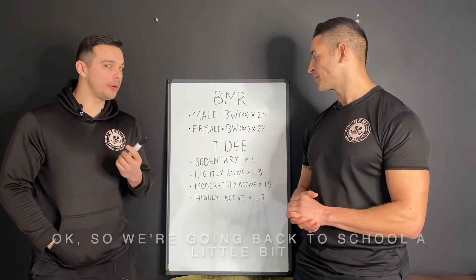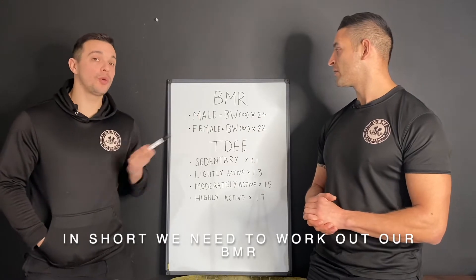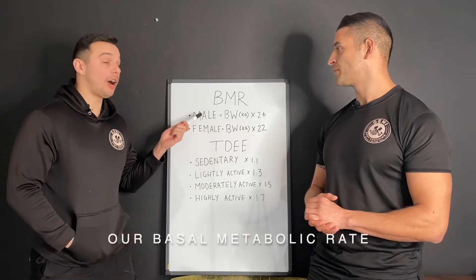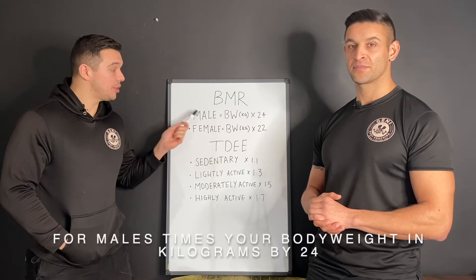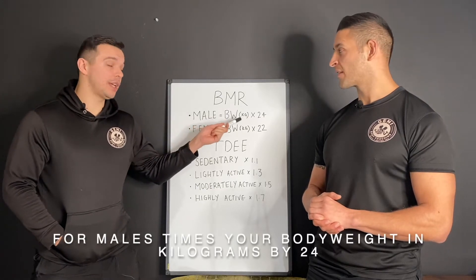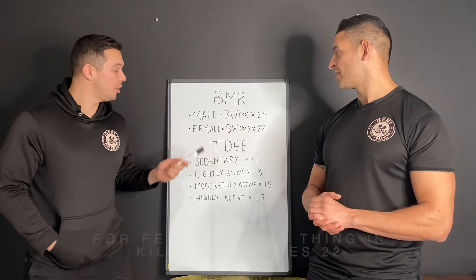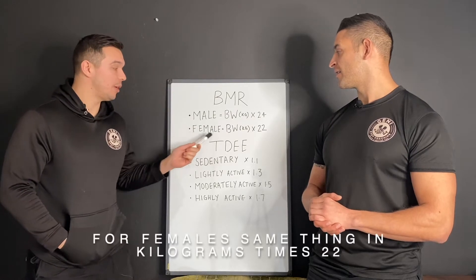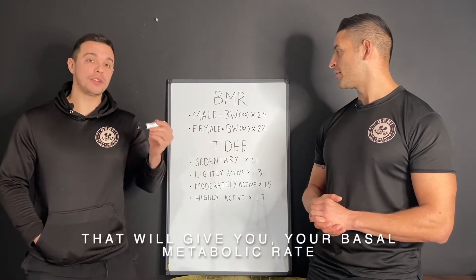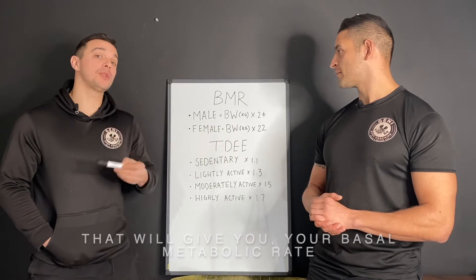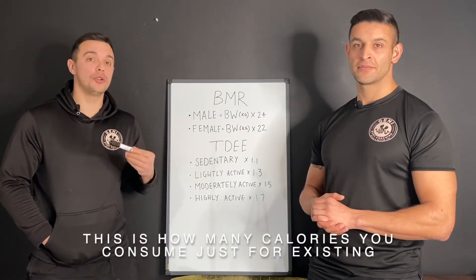We're going back to school a little bit with this one. The first thing we need to do is work out our BMR — our basal metabolic rate. To do that, for males you times your body weight in kilograms by 24, which gives you a total number. For females, same thing in kilos by 22. That gives you your basal metabolic rate — as we explained in the last post, this is how many calories you consume just pre-existing.